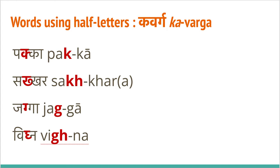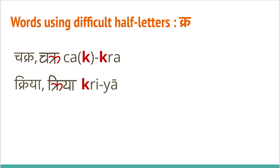The first word is pakka. The second one is sakkar — a note about this one: the last letter of the word, even though it is full, is pronounced only half. You can read it as sakkara with the final 'a' pronounced, giving three syllables, or drop that 'a' to get sakkar — the more common pronunciation with two syllables. The third one is jagga, the fourth is vigna. Notice how the half letter is pronounced with the syllable in front: pakka, sakkar, jagga, vigna.